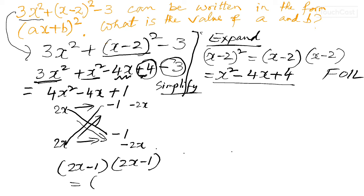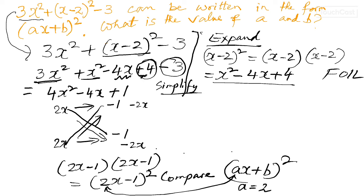Which can be shortened as 2x minus 1 squared. Now compare this with ax plus b squared. So if I compare these two, this will give me a equals 2 and the other part b will be equal to negative 1.